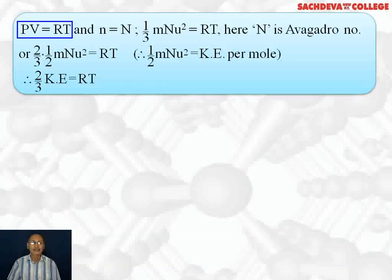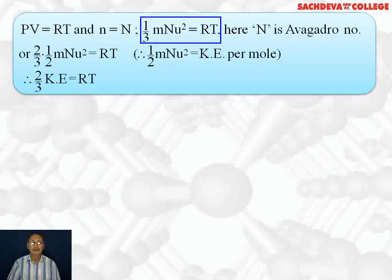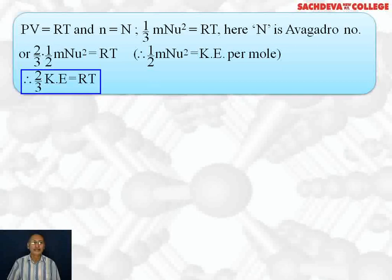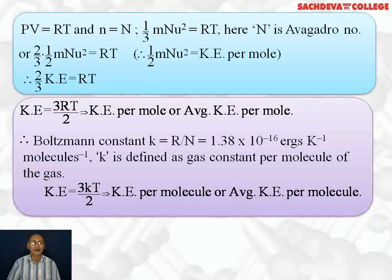We know that PV = NRT, and N here equals Avogadro's number. So (1/3) M N U² = RT. We can also write (2/3) × (1/2) M N U² = RT. And (1/2) M N U² is kinetic energy per mole. So (2/3) KE = RT, or kinetic energy = (3/2) RT. This clearly shows that kinetic energy is directly proportional to absolute temperature, and this is the average kinetic energy per mole.